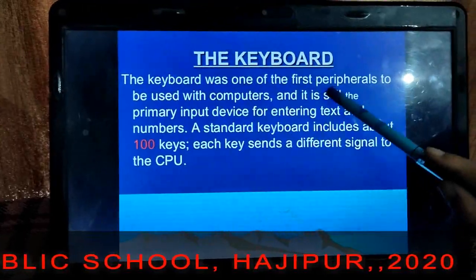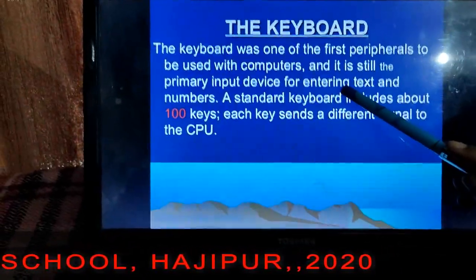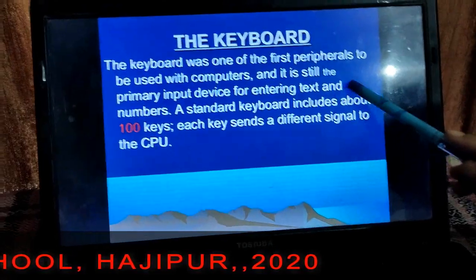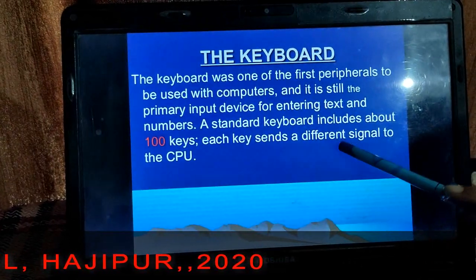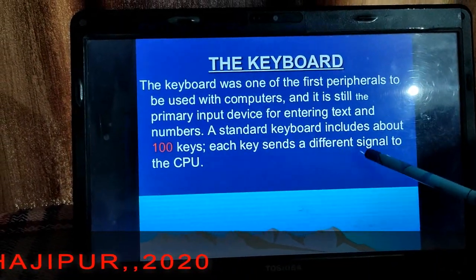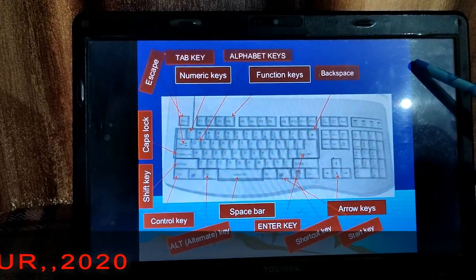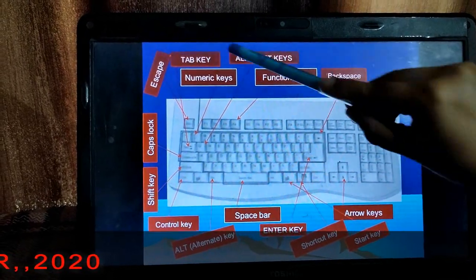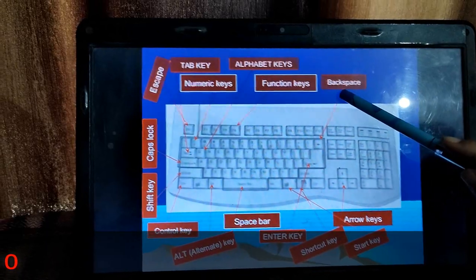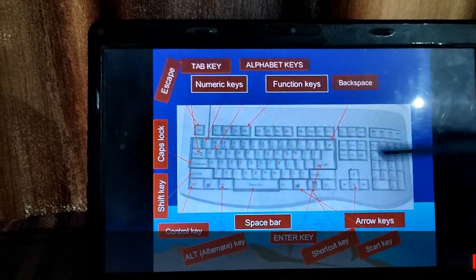The keyboard is the first peripheral to be used with a computer to enter text and numbers. This is the structure of the keyboard, which has a tab key, numeric keys, function keys, alphabetic keys, and so on.